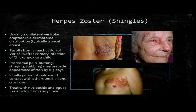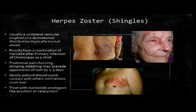Herpes zoster, or shingles, has increasing incidence after age 50. It presents in a dermatomal distribution, which is helpful for diagnosis. The rash is often preceded by prodromal pain and stinging, after which erythematous papules appear, then grouped vesicles, which can turn into pustular lesions and then crust over. The patient remains contagious until the lesions begin crusting. Interestingly, the prodromal pain can sometimes be confused with angina, renal colic, or appendicitis depending on where it's developing.